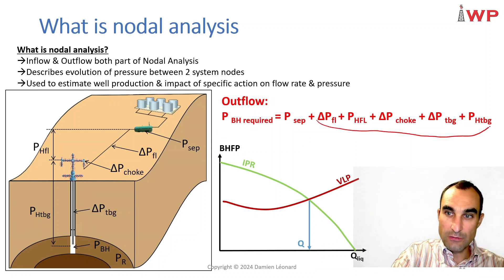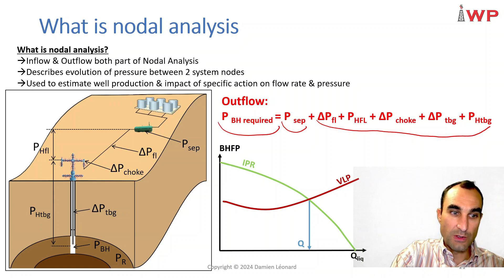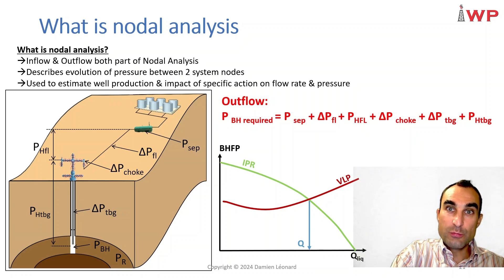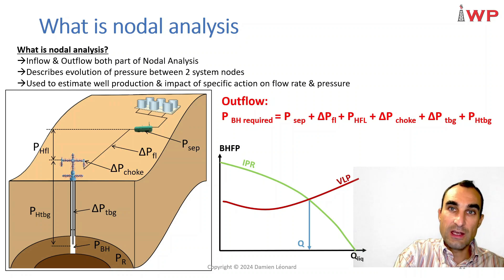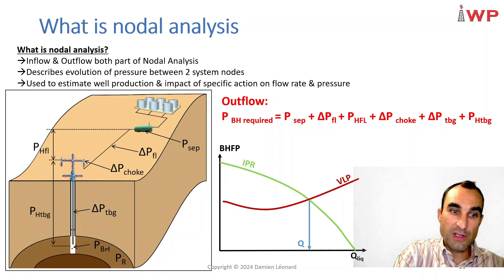So if I am able to calculate all of these terms and measure my separator pressure, I can calculate what is the required bottom hole flowing pressure to flow this well into my separator. Using the productivity index formula, if you know your reservoir pressure, your flow rates, and your productivity index, you can calculate the required bottom hole pressure for your hydrocarbons to flow from your reservoir to the bottom of your well at the targeted flow rate.